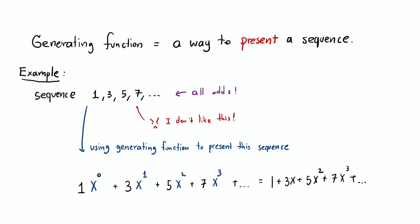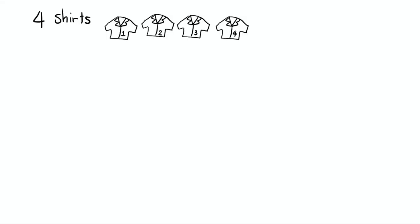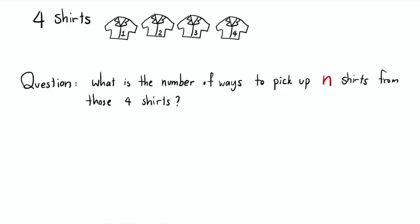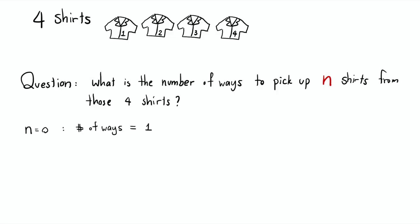What's cool about generating functions is they help you keep track of the size of something. With that in mind, let's jump right to an example. So let's say you have 4 shirts and they are different. We want to know how many ways we can pick n shirts out of those 4 shirts. For n equal to 0, that means you pick 0 shirts — there's only one way to do it, which is you don't pick anything.